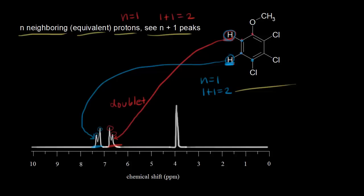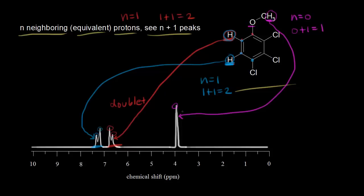What about the protons in magenta? How many neighbors do we have for those protons? We go over to the oxygen — no protons on that, no neighbors. So n is equal to zero. N plus one peaks: zero plus one is equal to one. We would expect only one peak for the signal for these three equivalent protons. And this is the signal — only one peak. We call this a singlet.